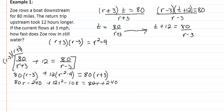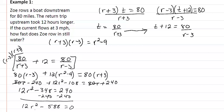Our 80r's are going to disappear when we move one to the other side. So we have 12r squared minus 348 equal to 240. We'll subtract 240 from both sides. Now I have 12r squared minus 588 equal to 0. This is divisible by 12, so when we divide by 12 we get r squared minus 49 equal to 0.